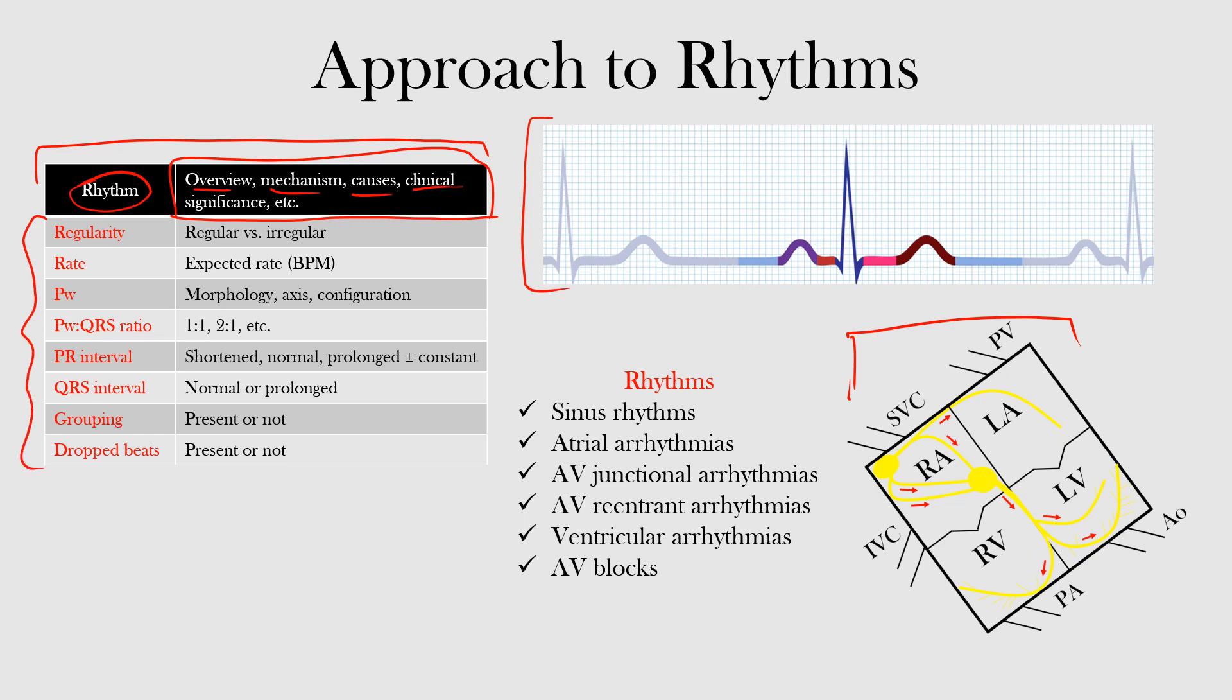We'll start with the irregularity - is it regular or irregular? If it's irregular, we have to decide is it regularly irregular or irregularly irregular. From that we'll find out the rate. We'll see how to find the rate with regular or irregular rhythms and what should be the expected rate for that rhythm.